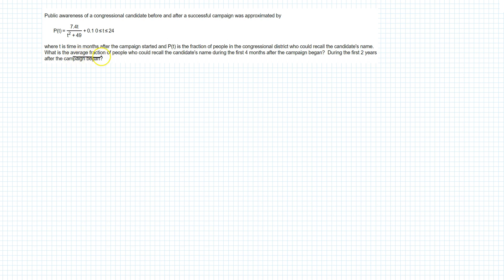We're talking about the average fraction of people who could recall a candidate's name during the first four months, and then also during the first two years. So these are two average value problems, but essentially we start and set them up the same way. The only thing that's going to change are the bounds on our integrals and what we divide by when we're done so that we get the average value.